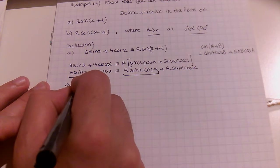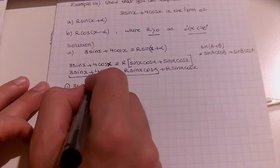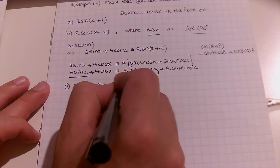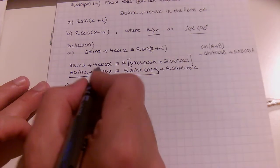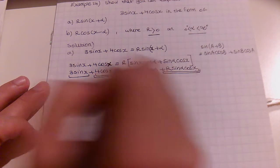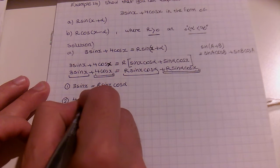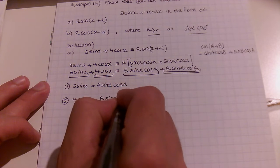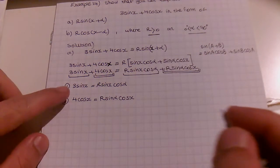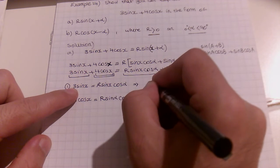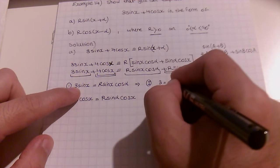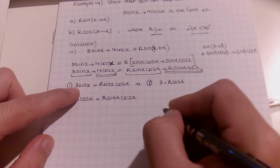Since the left and right hand sides are identical, we can match coefficients. Looking at 3·sin(x): we have sin(x) on both sides, so we match this term. We do not match 3·sin(x) with R·sin(α)·cos(x) because that has cos(x), not sin(x). So equation 1: for these to be identical, 3·sin(x) must equal R·sin(x)·cos(α).